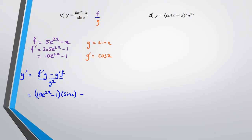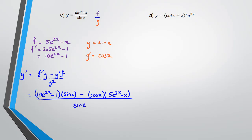Putting it all together: y' = (f'g − g'f) / g². So that's (10e^(2x) − 1) × sin(x) − cos(x) × (5e^(2x) − x), all divided by sin²(x).